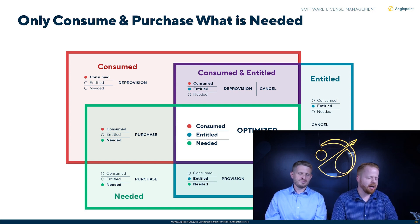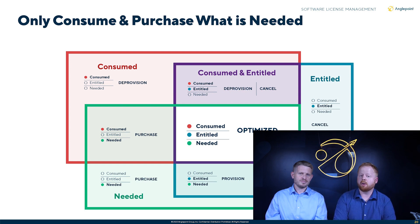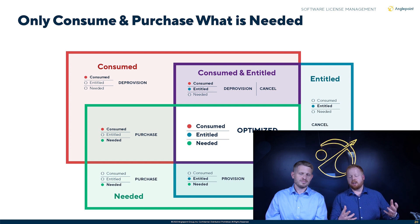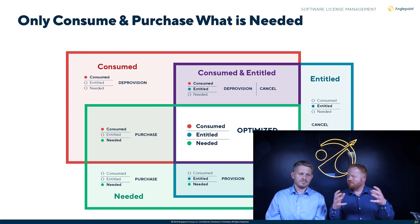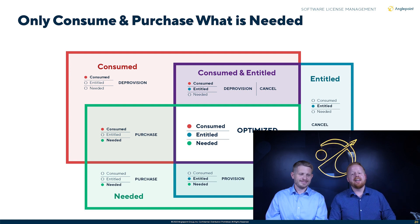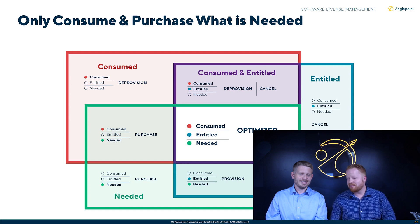This first box is the representation of software that we are consuming. Moving along, we can see that we are entitled to use certain software — we purchased it for a given publisher or product — but you can see that they don't perfectly overlap. They're not lined up, because it's really easy to deploy software.